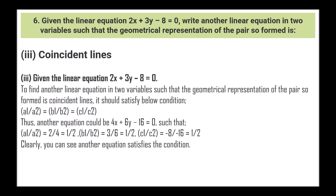Next, for coincident lines: it should satisfy a1/a2 = b1/b2 = c1/c2. Another equation could be 4x + 6y - 16 = 0, such that a1/a2 = 2/4 = 1/2, b1/b2 = 3/6 = 1/2, and c1/c2 = -8/-16 = 1/2. Clearly, this equation satisfies the condition.